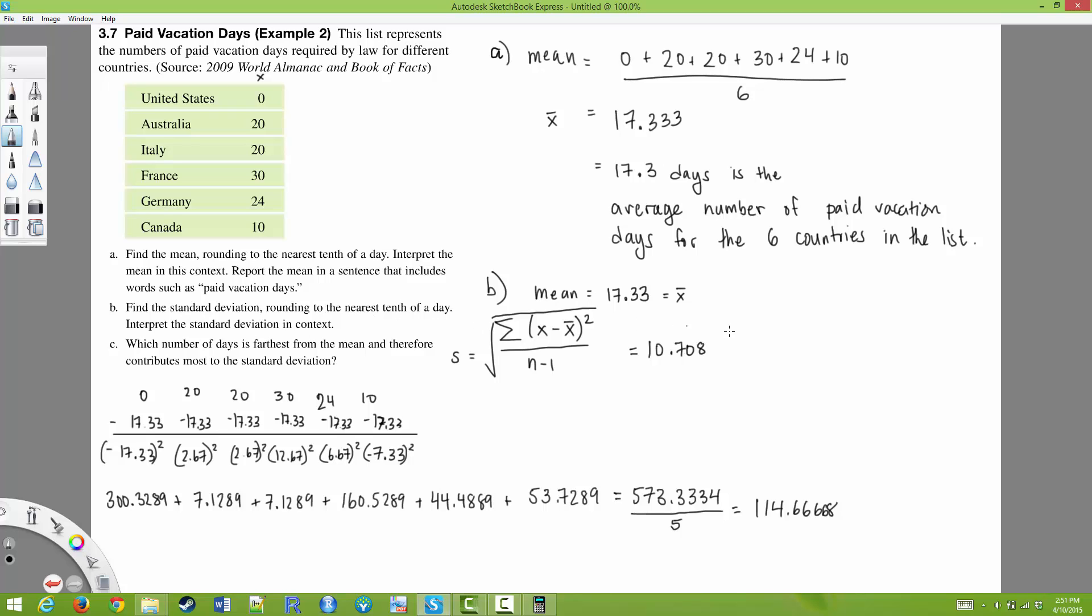And it asks us to round to the nearest tenth of a day. So that gives us 10.7. So 10.7 days is the standard deviation.